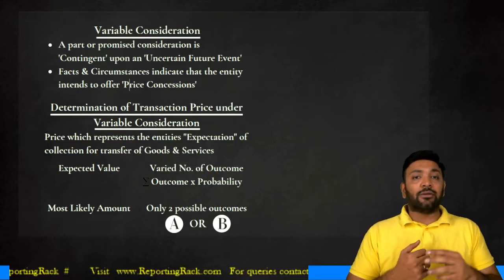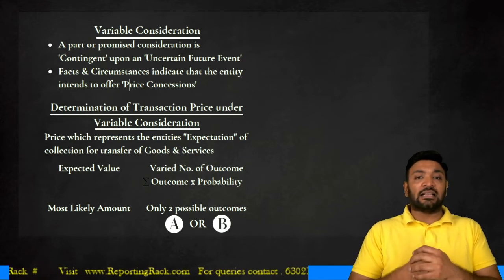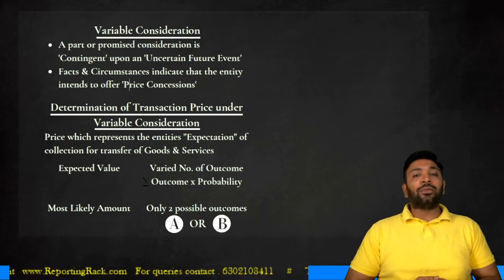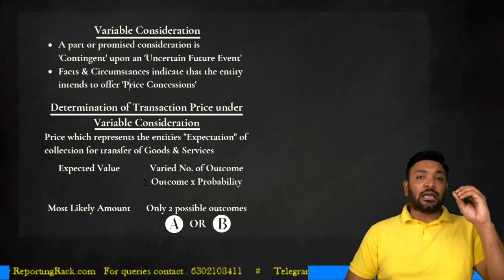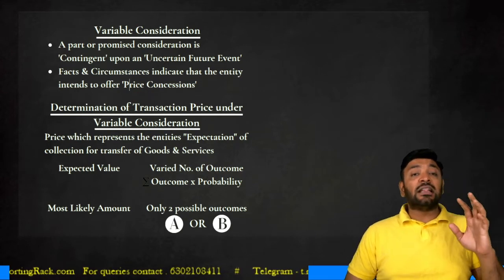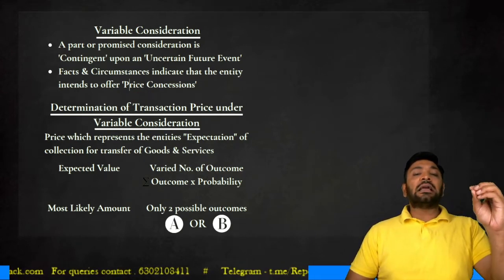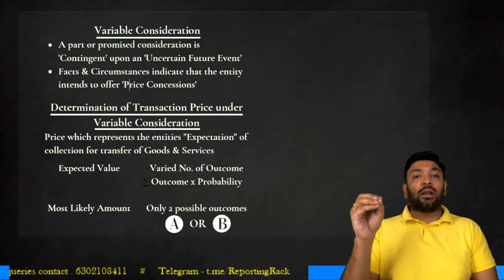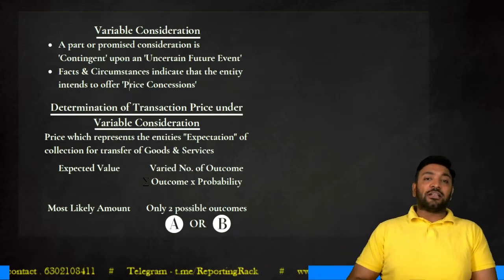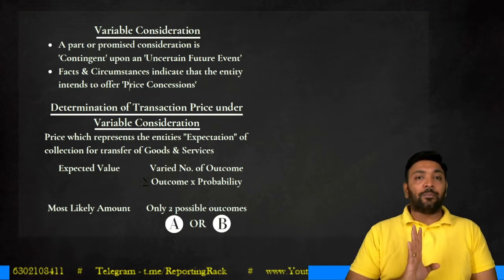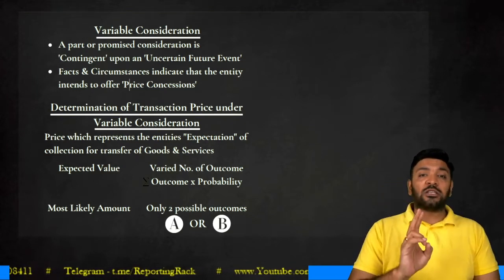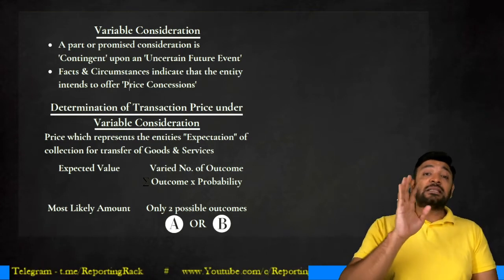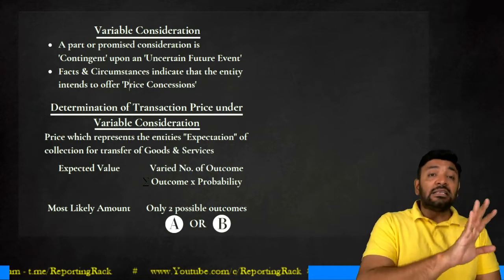There are two ways to determine the transaction price based on expectation. Number one is expected value, and number two is most likely amount. Most likely amount can be used when there are only two possible outcomes — for example, if I complete the contract within 15 months I get 110 rupees; if I complete within 18 months or later I get 100 rupees. With only two possible outcomes, I use the most likely amount concept.